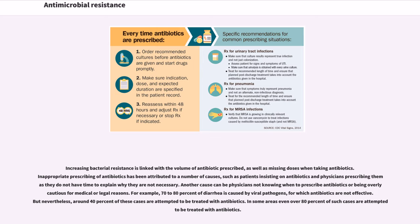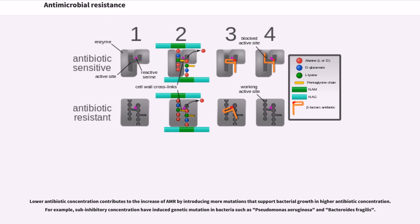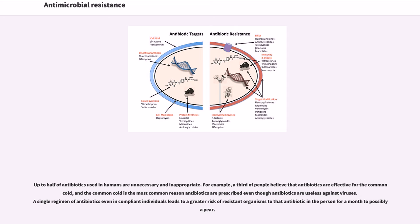For example, 70-80% of diarrhea is caused by viral pathogens for which antibiotics are not effective, but nevertheless around 40% of these cases are attempted to be treated with antibiotics. In some areas even over 80% of such cases are attempted to be treated with antibiotics. Lower antibiotic concentration contributes to the increase of AMR by introducing more mutations that support bacterial growth in higher antibiotic concentration. Sub-inhibitory concentrations have induced genetic mutation in bacteria such as Pseudomonas aeruginosa and Bacteroides fragilis. Up to half of antibiotics used in humans are unnecessary and inappropriate.